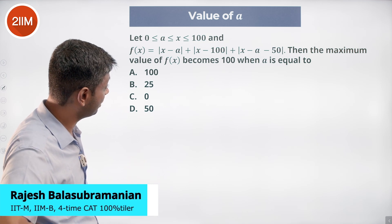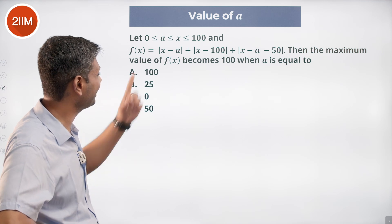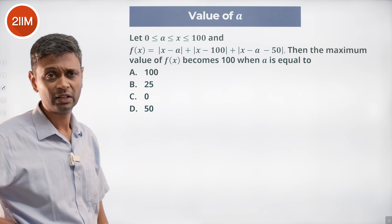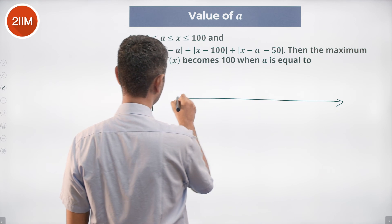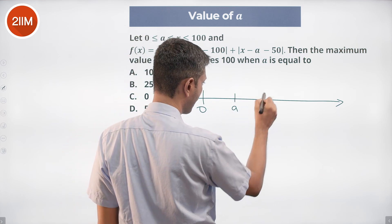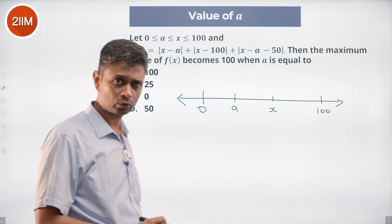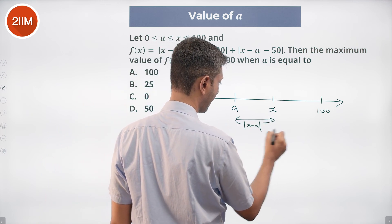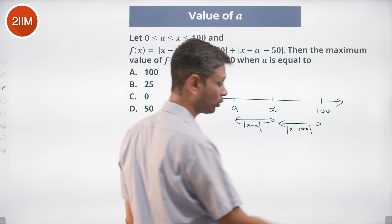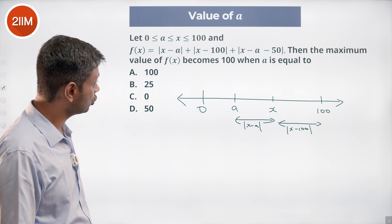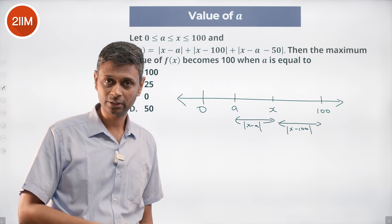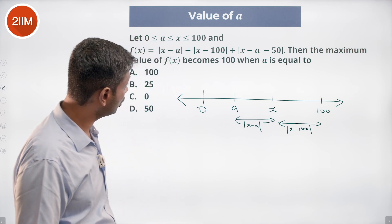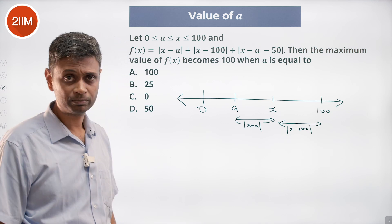f(x) equals modulus of (x minus a) plus modulus of (x minus 100) plus modulus of (x minus (a plus 50)). This represents the distance between x and a, distance between x and 100, and distance between x and (a plus 50). The maximum value of f(x) becomes 100, and we need to find the value of a.